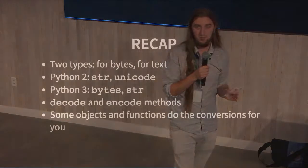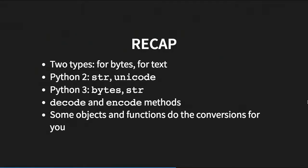To a lesser extent, there's sys.stdin and stdout, but they're not very reliable when you always want to encode data. To recap in Python: two types — one for bytes, one for text. In Python 2 that's str for bytes and unicode for text; in Python 3 it's bytes for bytes and str for unicode. You can use decode and encode methods to transfer between these two types, and some libraries will do the conversions for you.